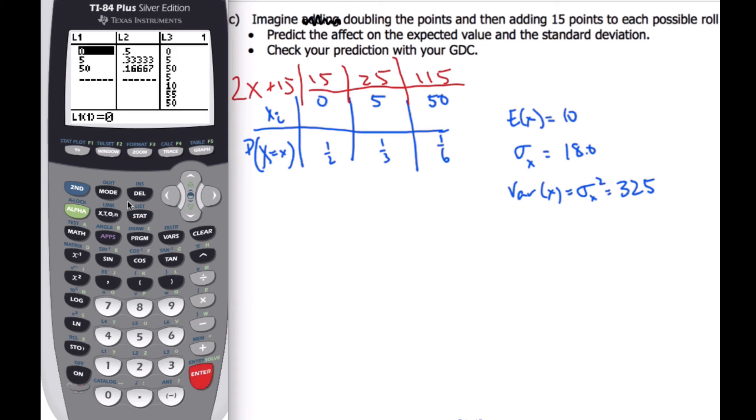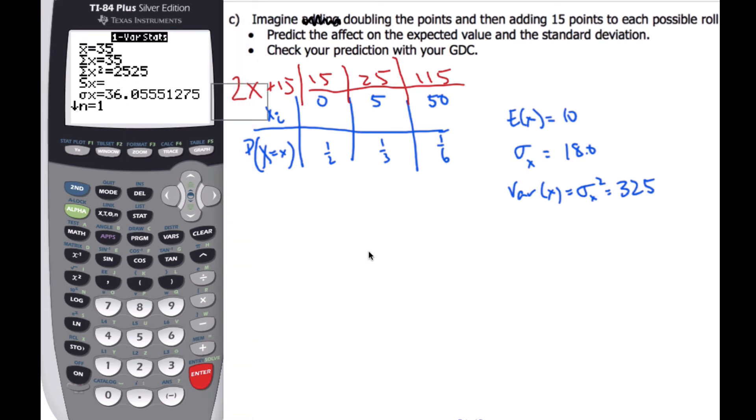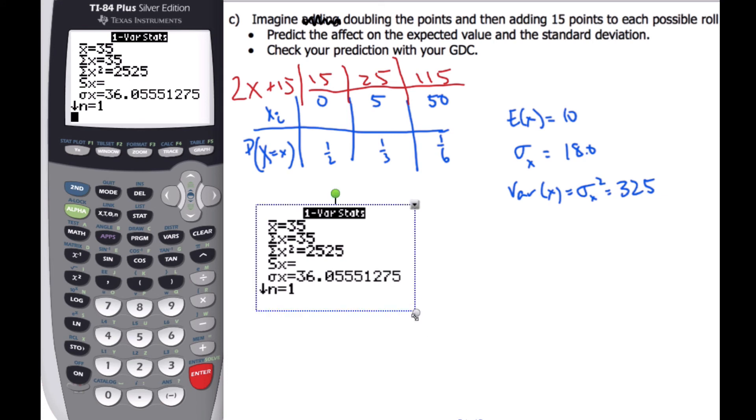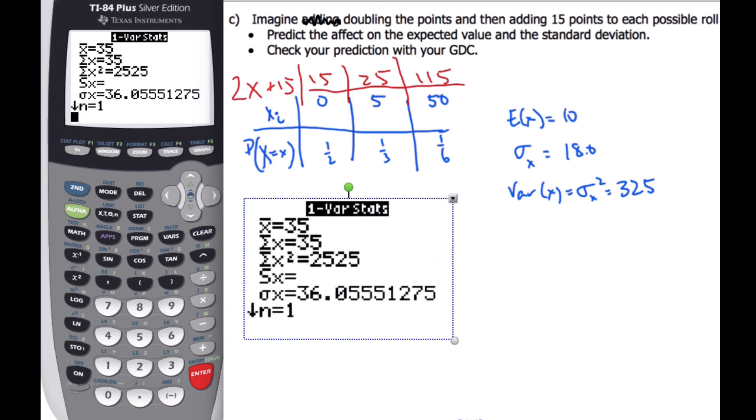I'm going to change L1 to 15, 25, and 115, and then do my calculations all over again. And here's what I get, I get that. And so my expected value is 35.